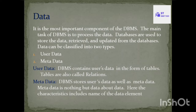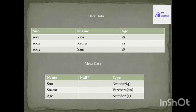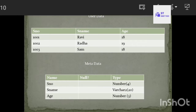The next one is metadata. Metadata is nothing but data about data. Looking at these tables — the first table indicates user data. User data is stored in columns. The column names are: S.No, Name, and Age.